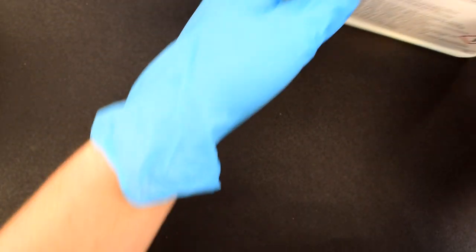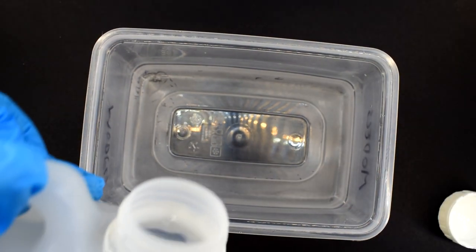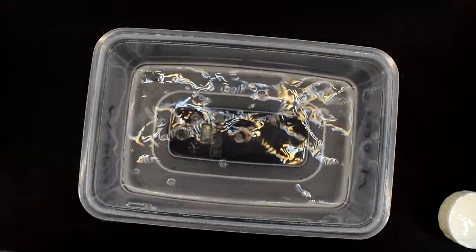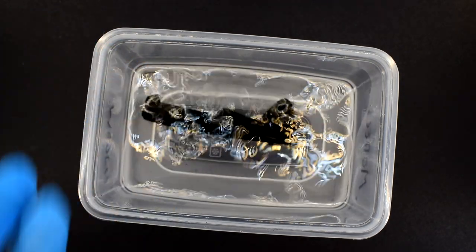You'll also need a plastic pot with a lid, big enough to hold your model parts. Pour in the IPA, just enough to fully cover the parts you want to strip, and then pop the plastic parts into the pot as well.